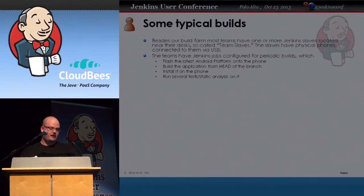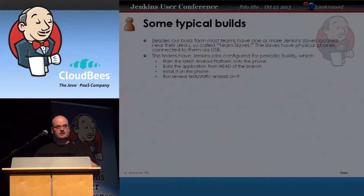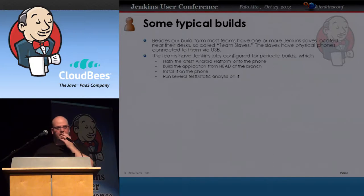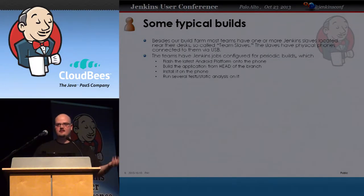The typical jobs for an application, for example, will flash the latest version of the Android platform onto the phone, build the application — either the specific change that was made or, for a nightly build, take the head — install that on the phone, and then run whatever test suites they have.